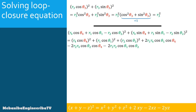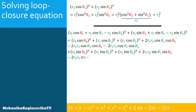The second squared term gives: R4²·sin²θ4 + R1²·sin²θ1 + R2²·sin²θ2 + 2R1R4·sin θ1·sin θ4 − 2R2R4·sin θ2·sin θ4 − 2R1R2·sin θ1·sin θ2.